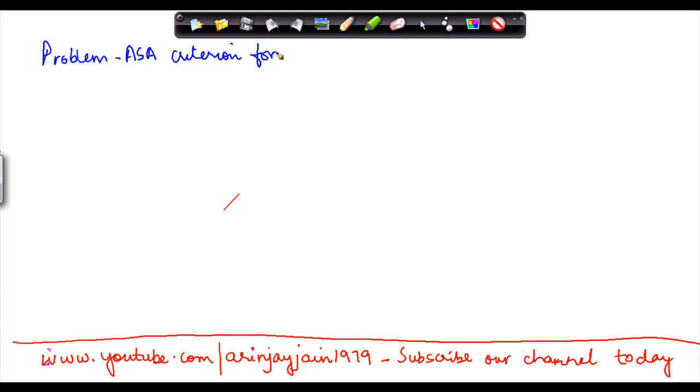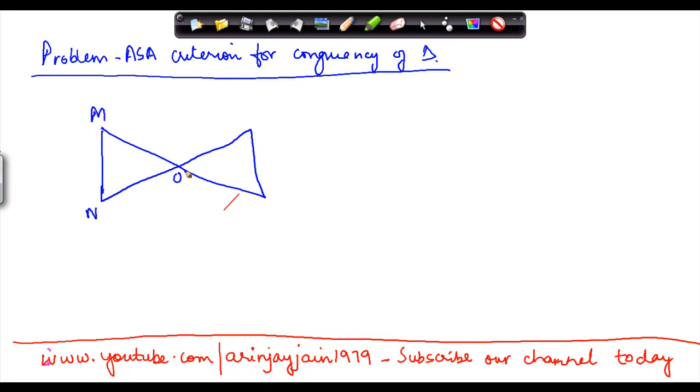Criteria for congruency of triangles. Let us say M, N, O, P, Q.